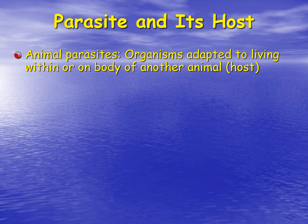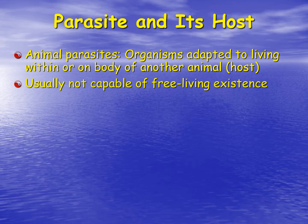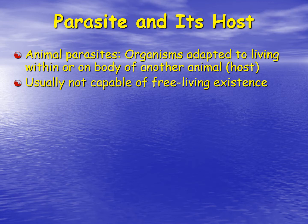So what is a parasite? An animal parasite is an organism that is adapted to live within or on the body of another animal, which is considered its host. Most of these parasites are typically not capable of free living existence, though some actually live in water environments. They all tend to have a very complex life cycle. If you want to know any of these life cycles, go to CDC.gov and type in the name of the parasite and they will show you the life cycle, but we will not get into specifics on any of them.